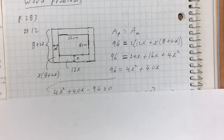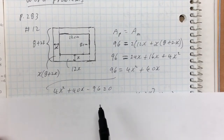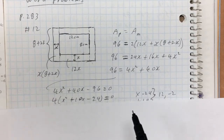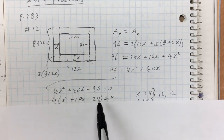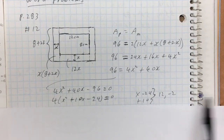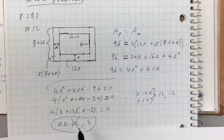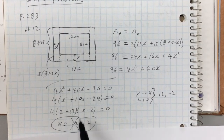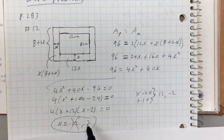After factoring out 4, we get X² + 10X − 24 = 0. Look for two numbers that multiply to negative 24 and add to 10: those are 12 and negative 2. So it factors, giving us X = 12 or X = −2. We cross out negative 2 because if X equals negative 2, the width of the border would be negative, which doesn't make sense. So the width of the border must be 2 centimeters.